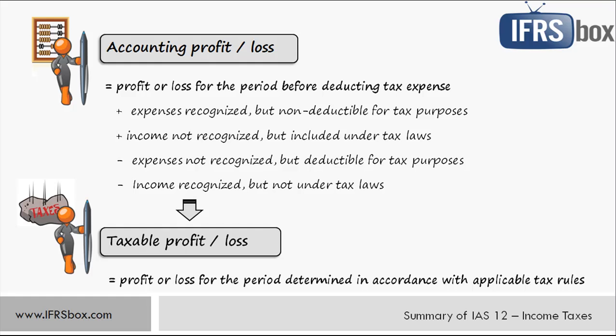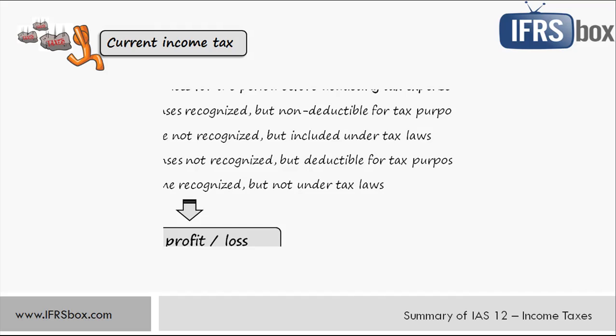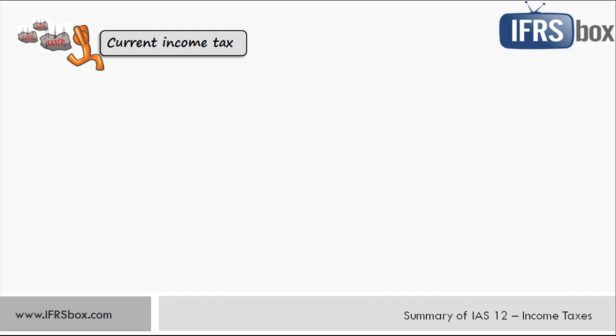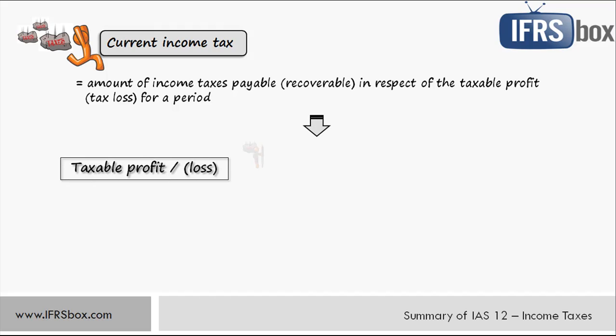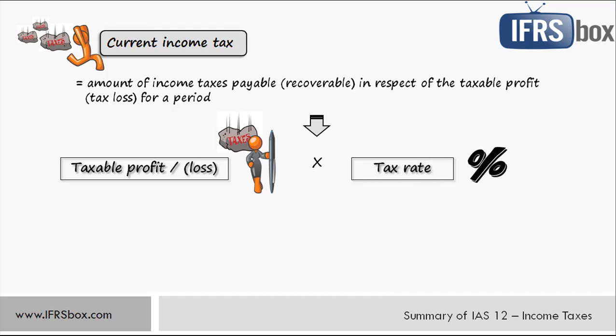When we have arrived at taxable profit from accounting profit, it's time to explain current income tax — the amount of income taxes payable or recoverable in respect of the taxable profit or tax loss for the period. Income tax payable is calculated as taxable profit times the tax rate. Sometimes there could be an income tax recoverable when the entity reaches a taxable loss instead of taxable profit. Current income tax payable shall almost always be recognized to profit or loss, with the accounting treatment being to debit expenses in profit or loss and credit income tax liability.